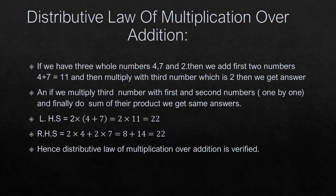What is distributive law of multiplication over addition? We have any 3 whole numbers — taking 4, 7 and 2. We add the first two numbers: 4 and 7 gives 11, and then multiply with the third number 2 to get the answer. That is one side. On the second side, we multiply the third number with the first and second numbers one by one, and finally do the sum of their products to get the answer.